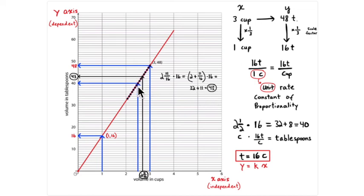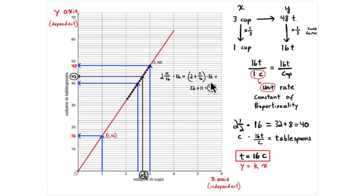Reading across the graph confirms that two and eleven-sixteenths cups equals forty-three tablespoons, matching the calculation. The key insight is that eleven-sixteenths times sixteen — the sixteens cancel out, since one-sixteenth of sixteen is one, so eleven times one equals eleven. Adding that to thirty-two gives forty-three tablespoons. The graph confirms the calculation and I hope this idea of the sixteens canceling makes sense.